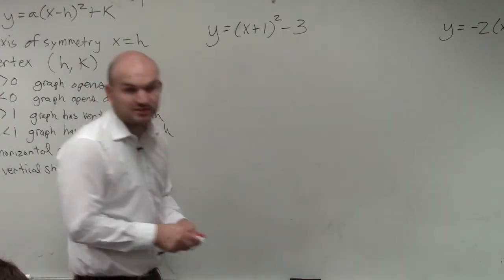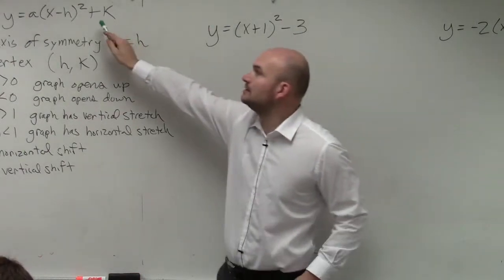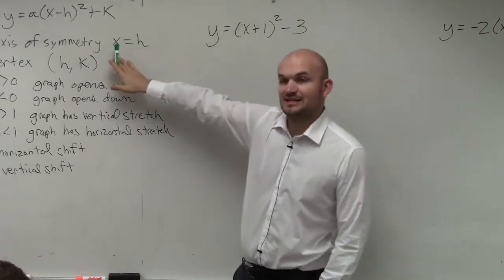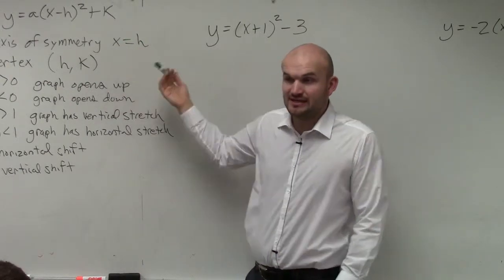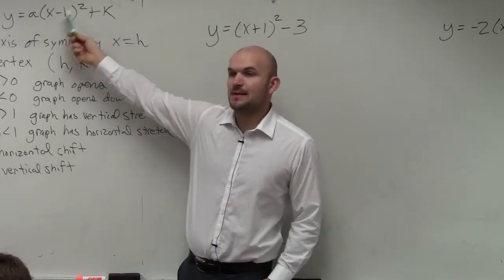Now, based on our vertex form of our equation, we can identify that the axis of symmetry is going to be h. So we need to identify what h is. Remember it says x minus h.